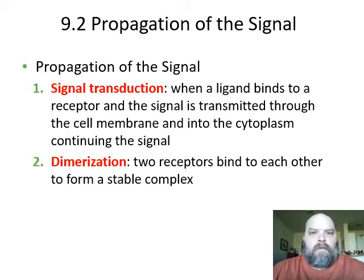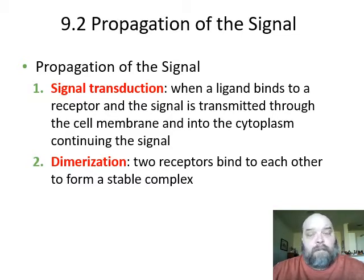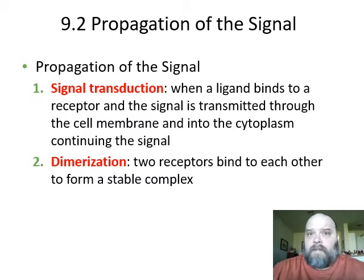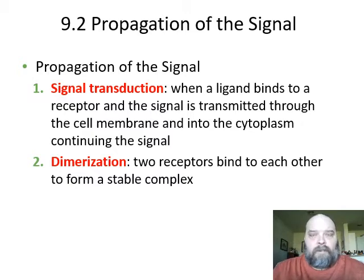What we see is what is referred to as signal propagation: signal from outside gets in, spreads throughout the cell, cell response. There are going to be four steps to this. First step: signal transduction — that signal outside the cell has to get in. So what do we see here?